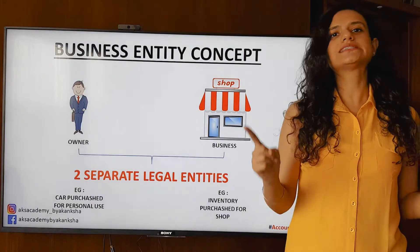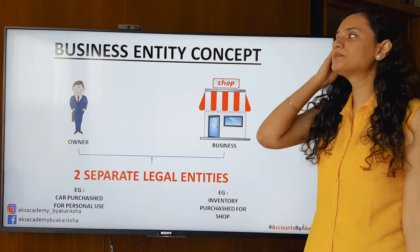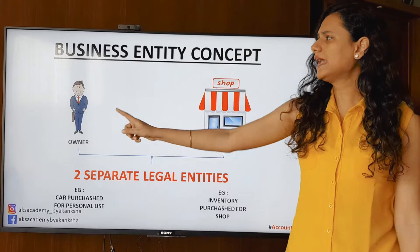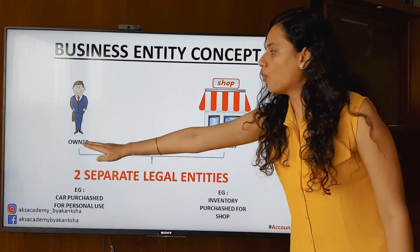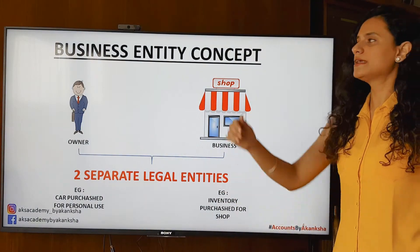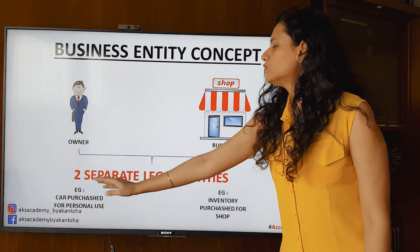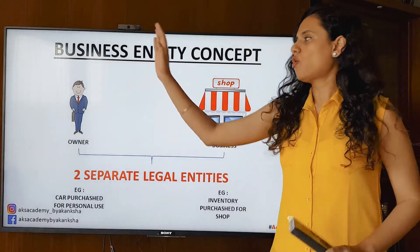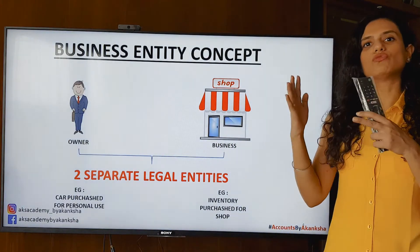So with this we come to our first concept — the business entity concept — also one of the easiest concepts you'll find. Let's understand it: we have an owner and that owner's business is a shop they're running. So the owner and the shop, that is the business, are two separate legal entities. The business entity concept says that the owner and their shop are two separate legal entities. We can never say that the owner and their shop are the same thing. Whatever the owner does in their personal life is a separate matter, and what they do for the shop is a separate matter.